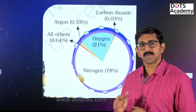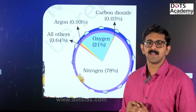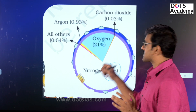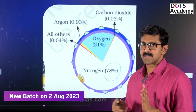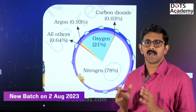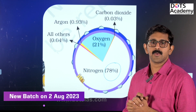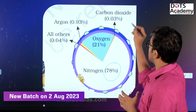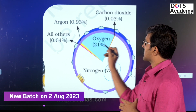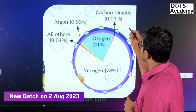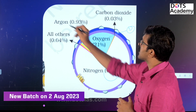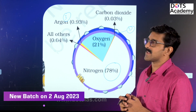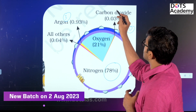Atmospheric gases: nitrogen is 78% of the atmosphere — that is the largest percentage. Carbon dioxide is 0.03% of the atmosphere.